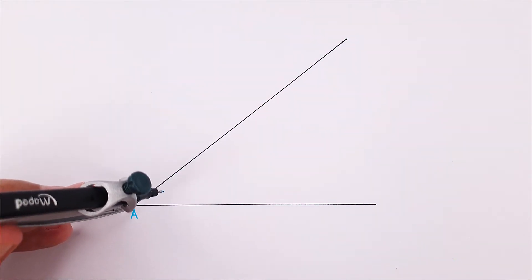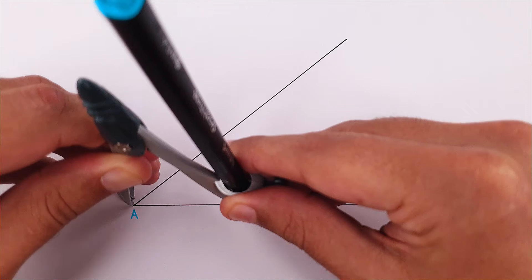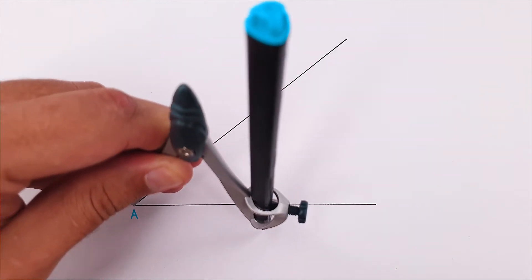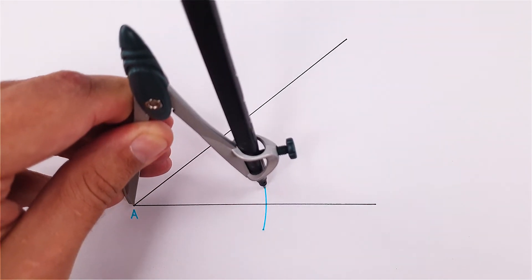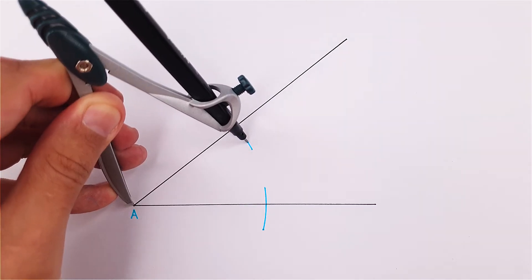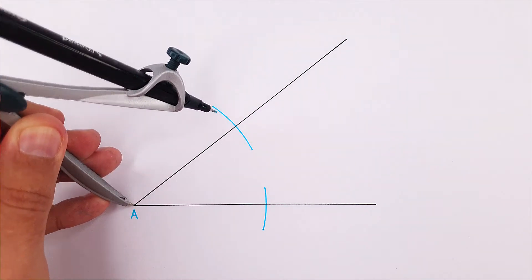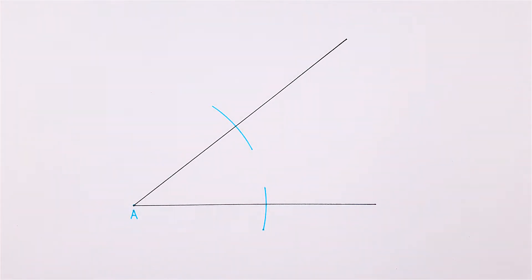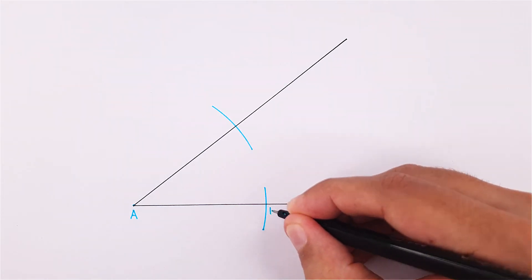Place your compass on point A and adjust it to any measurement and draw an arc that will section both of your sides. We can label these intersecting points as 1 and 2.